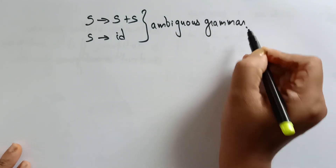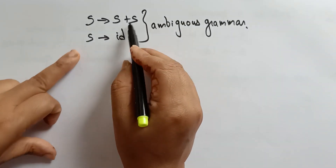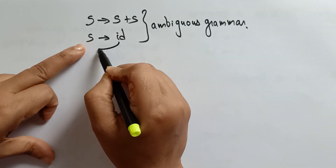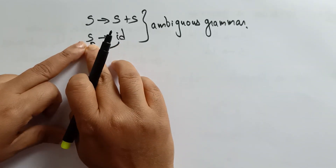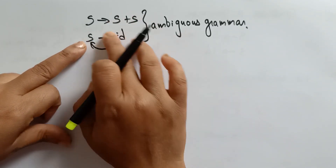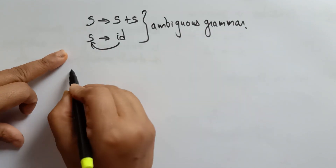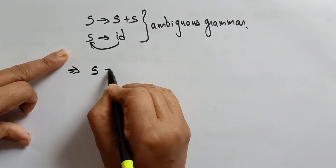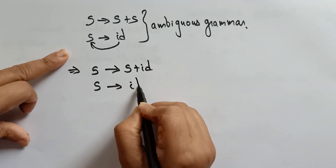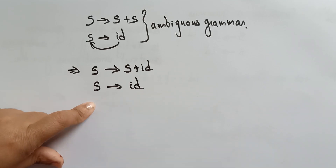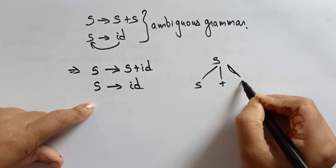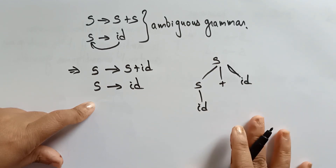Now construct the unambiguous grammar. In place of s, I am replacing with id, because id is a terminal. If you replace the non-terminal with the terminal, the ambiguity will be reduced. So according to the rules, this is left recursion: s determines s plus id, and s determines id.